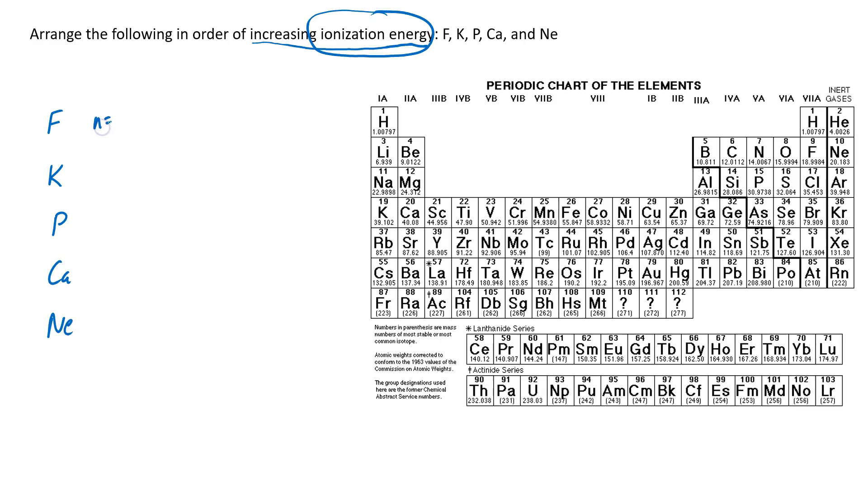And it may be helpful to look at what shell they're in. Fluorine is in the second shell, potassium is in the fourth shell, phosphorus is in the third shell, calcium is also in the fourth shell, and neon is in the second shell.